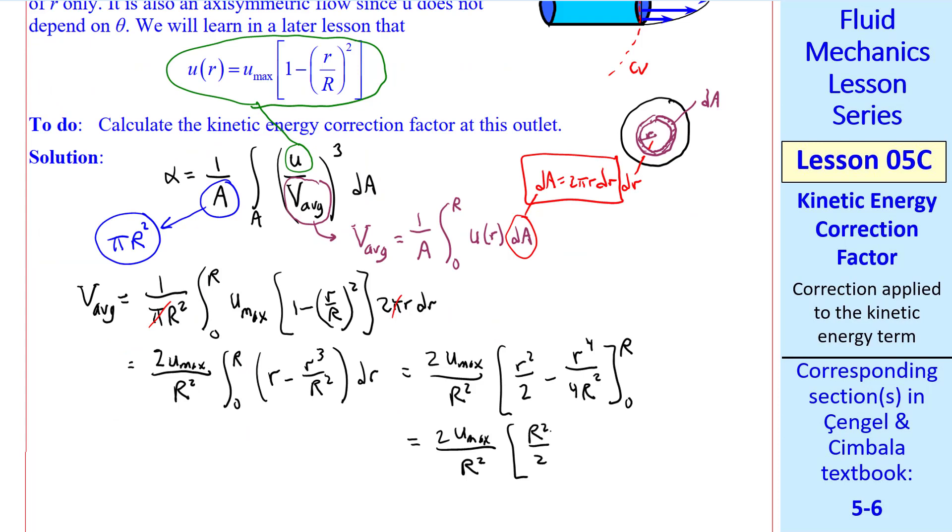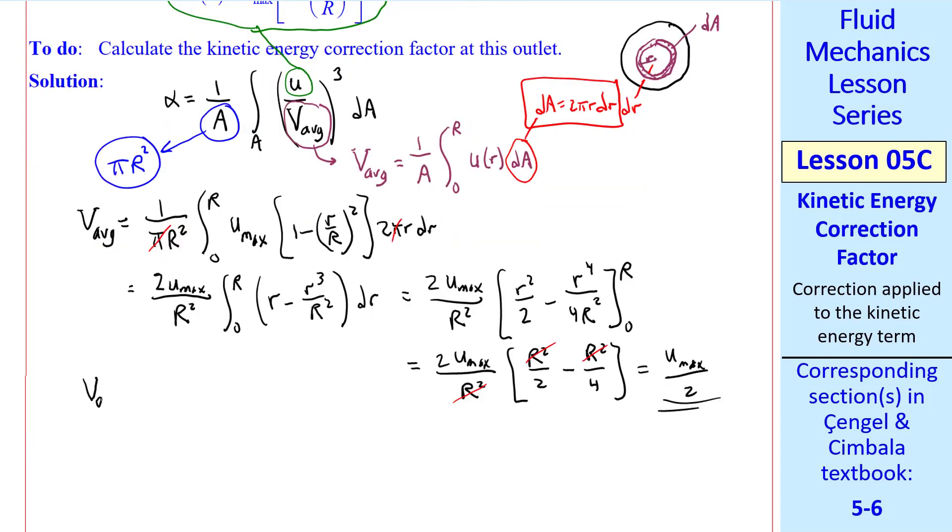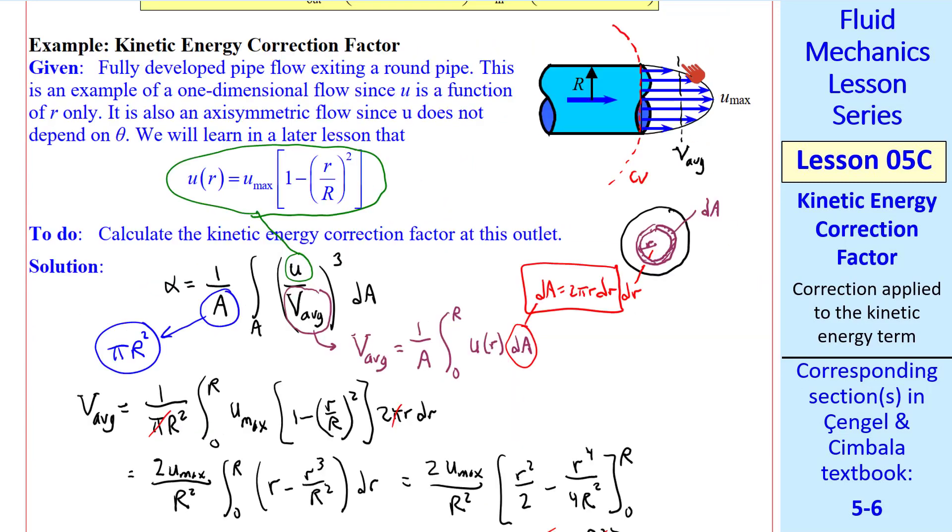and we plug in the limits of the integral, which are 0 to R. This gives us 2u_max over R², R² over 2, minus R² over 4. The R²'s cancel out, and we end up with u_max over 2. So after all that algebra, the average speed is simply u_max, the maximum speed, divided by 2.